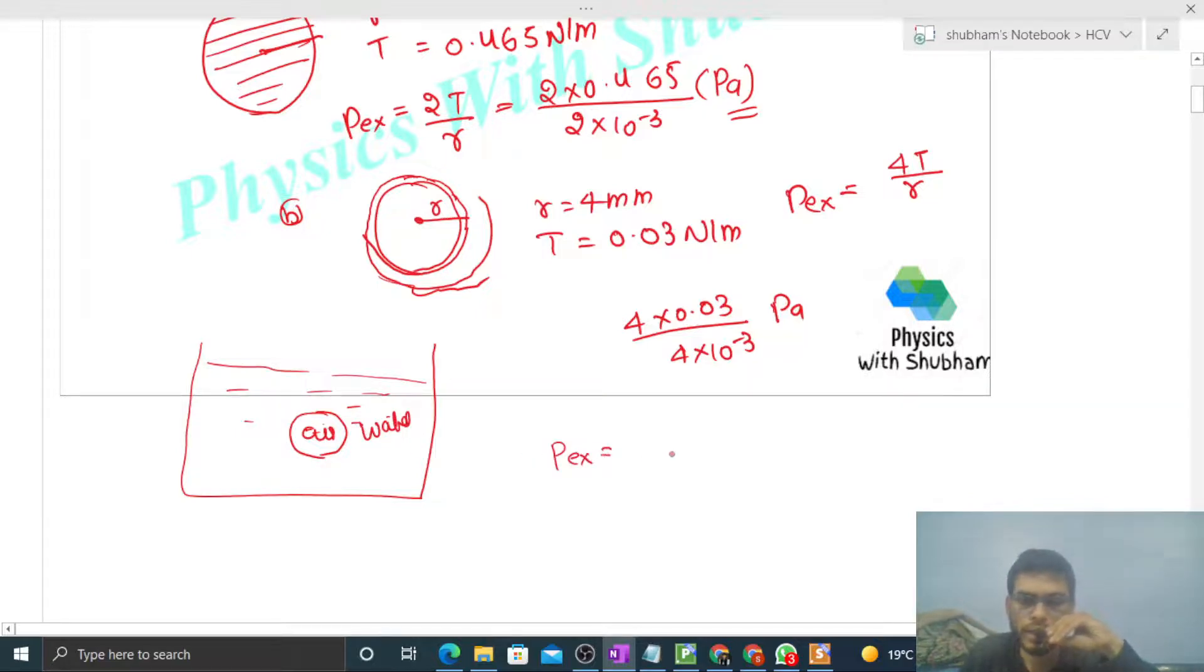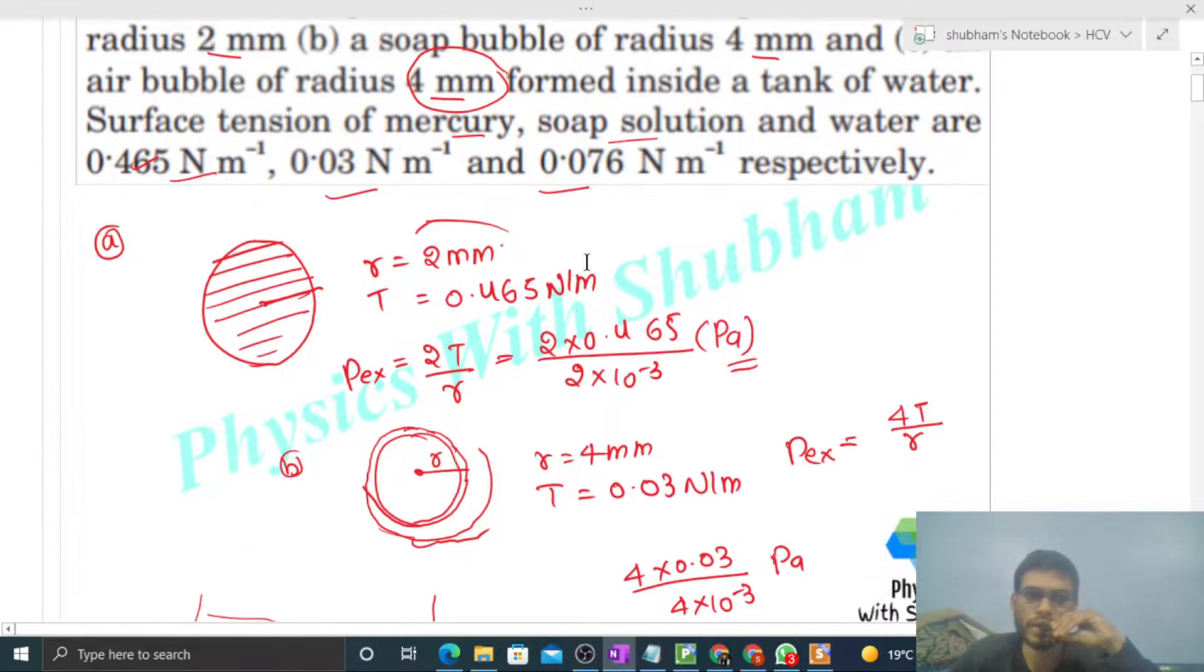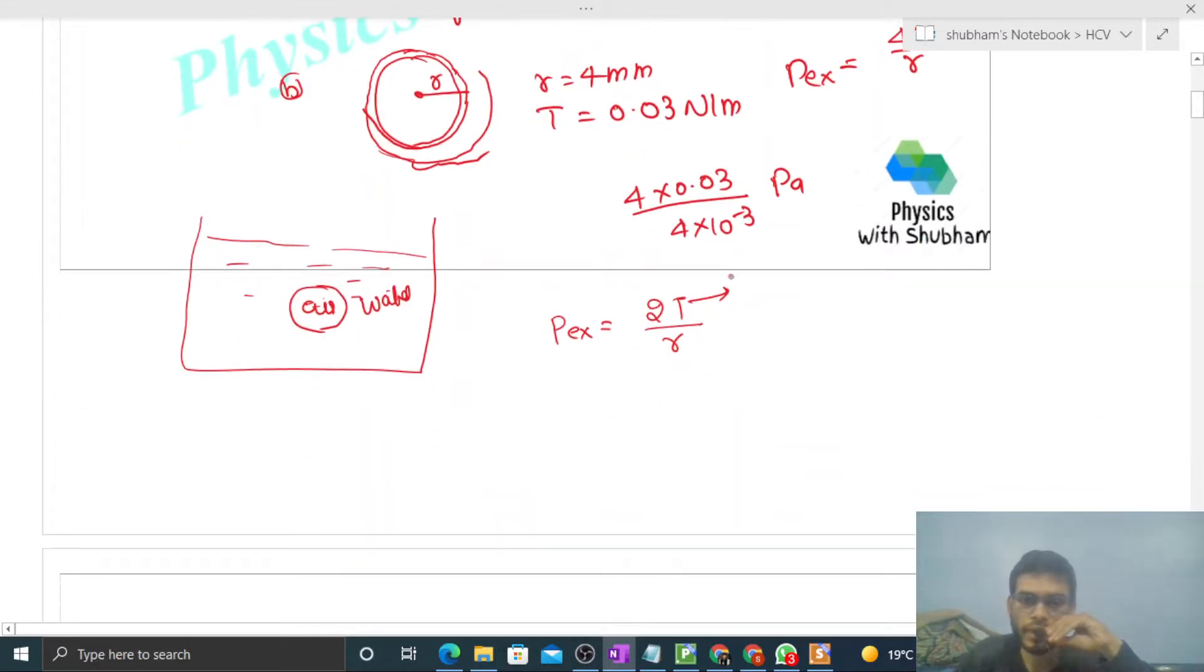So how much will the excess pressure be in an air bubble? That will be simply 2T divided by R. And the tension value is given—the surface tension of water is 0.076. So T value will be 0.076.